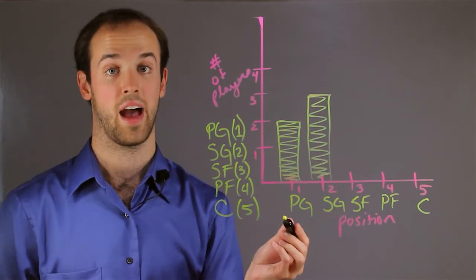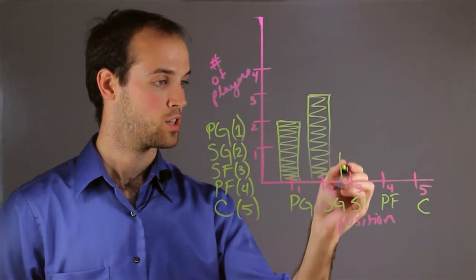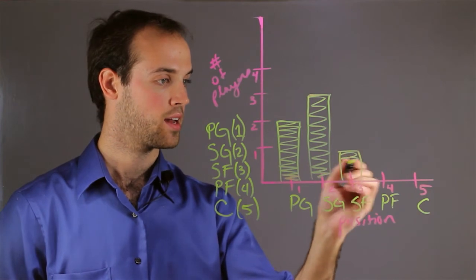For small forwards, let's say I only have 1. So I just go up to 1, just like that, and color it in.